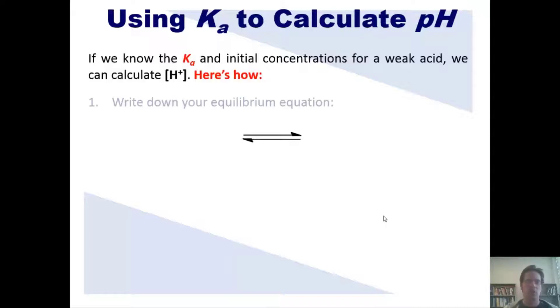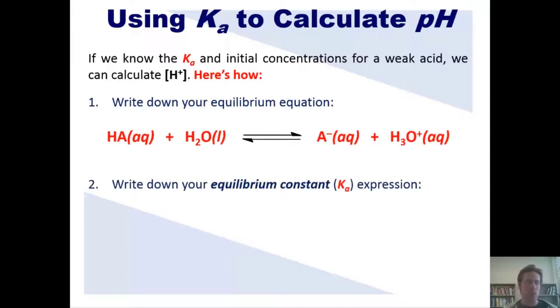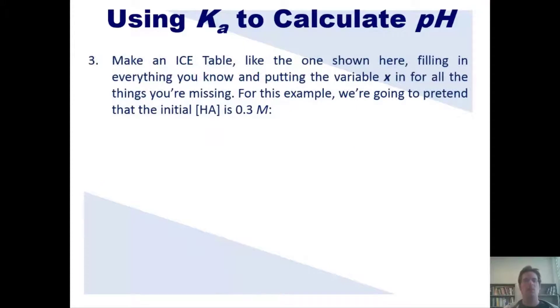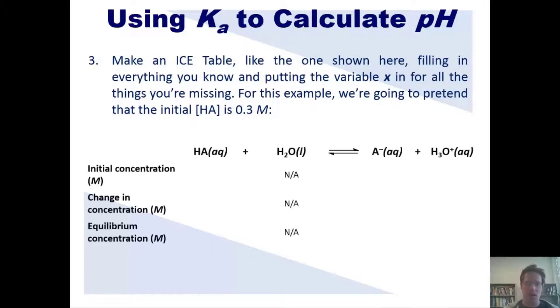Here's how we do that. First, we write down our equilibrium equation, which generically should look like this. Second, we have to write down our equilibrium constant or Ka expression, which should look like this. Third, we make an ICE table, like the one shown here, where we fill in everything that we know, and then we put a variable X in for everything that we don't know. For this example, we're going to pretend that we have an initial weak acid concentration of 0.3 moles per liter.